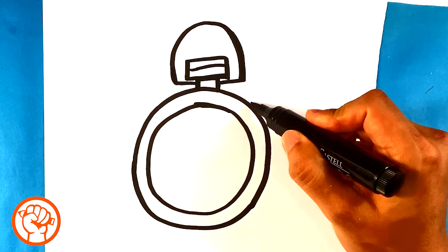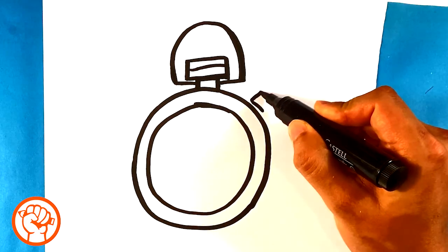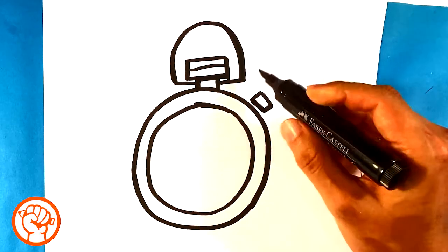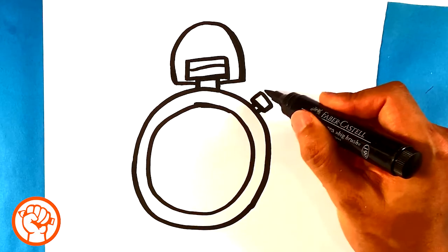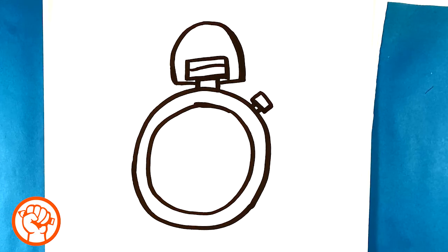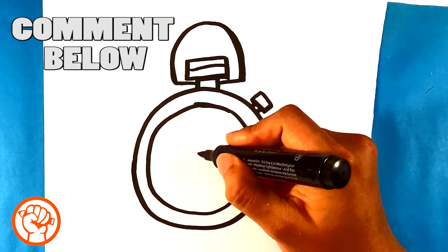Then we're going to go to the right side and I'm going to draw another kind of square, but it's going to be at an angle. Alrighty.